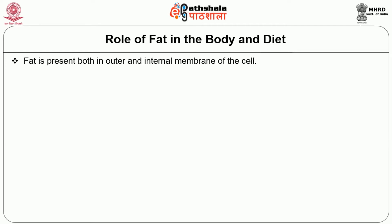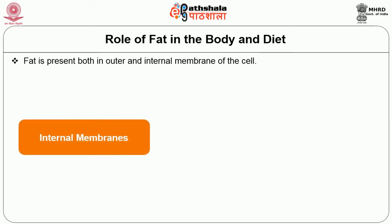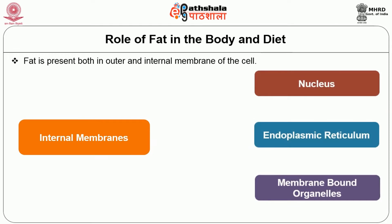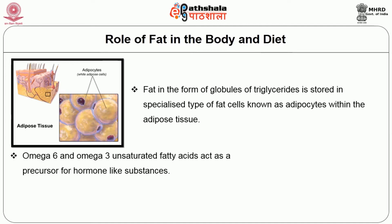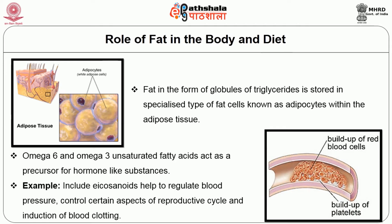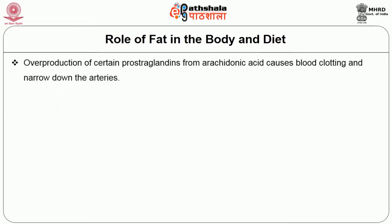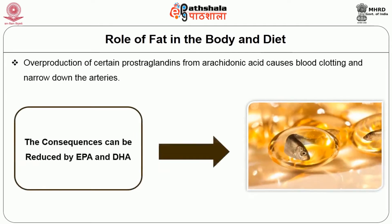Fat is present both in the outer and internal membrane of the cell. Internal membranes include the nucleus, endoplasmic reticulum and other membrane-bound organelles. Fat in the form of globules of triglycerides is stored in specialized fat cells known as adipocytes within the adipose tissue. Omega-6 and omega-3 unsaturated fatty acids act as precursors for hormone-like substances such as eicosanoids, which help to regulate blood pressure, control certain aspects of the reproductive cycle, and induction of blood clotting. Overproduction of certain prostaglandins from arachidonic acid causes blood clotting and narrowing of the arteries.